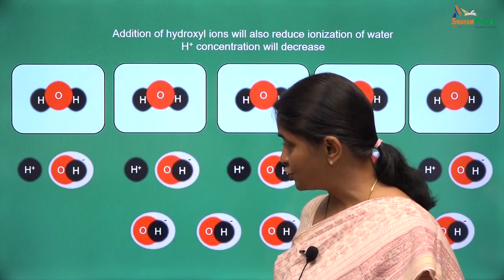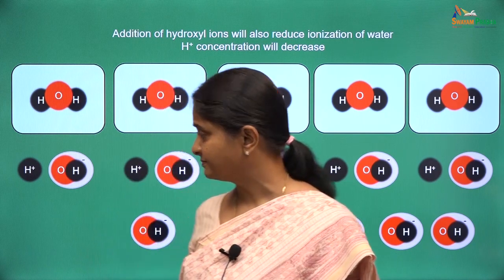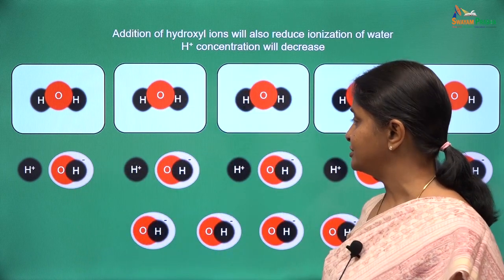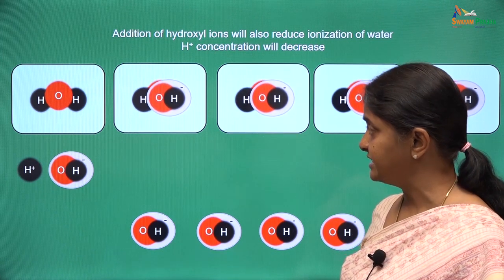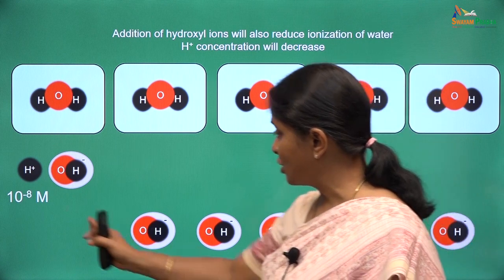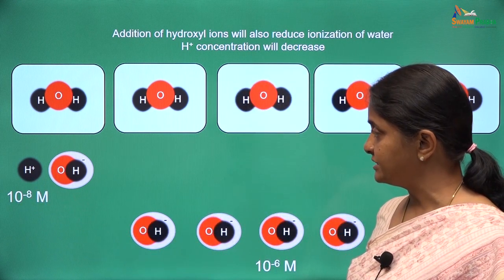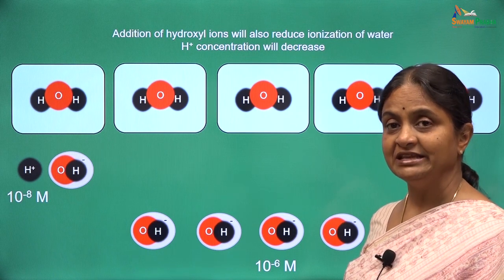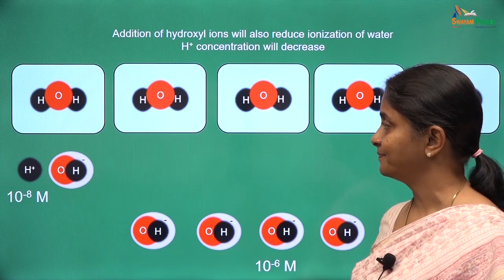When you add extra hydroxyl ions to the system, some of the water molecules in the ionized state will move into the stable state, and you will have concentrations of hydrogen and hydroxyl ions that maintain the ionization product constant of water.